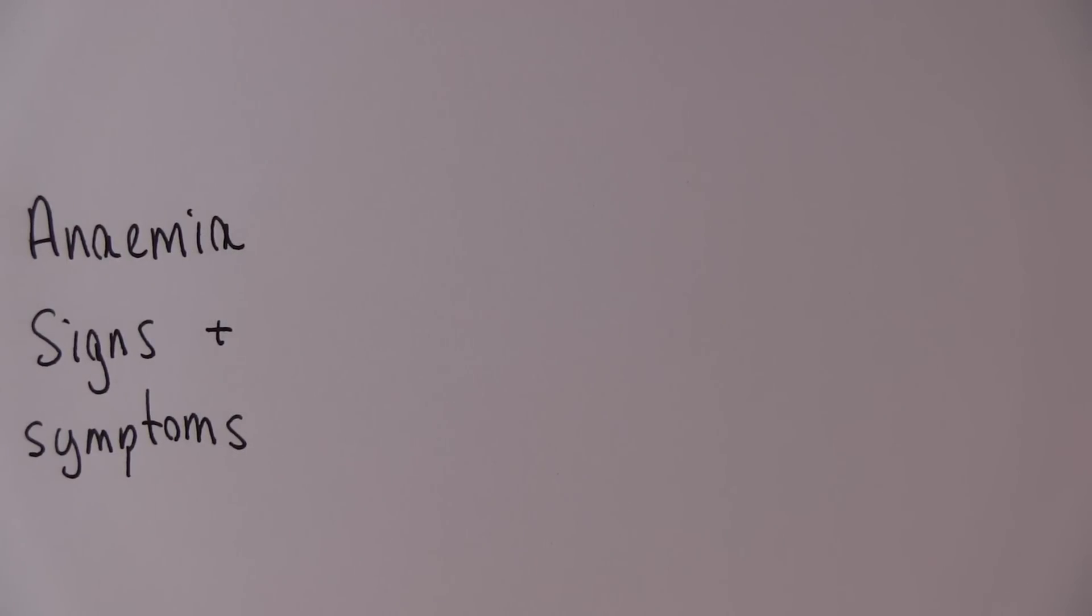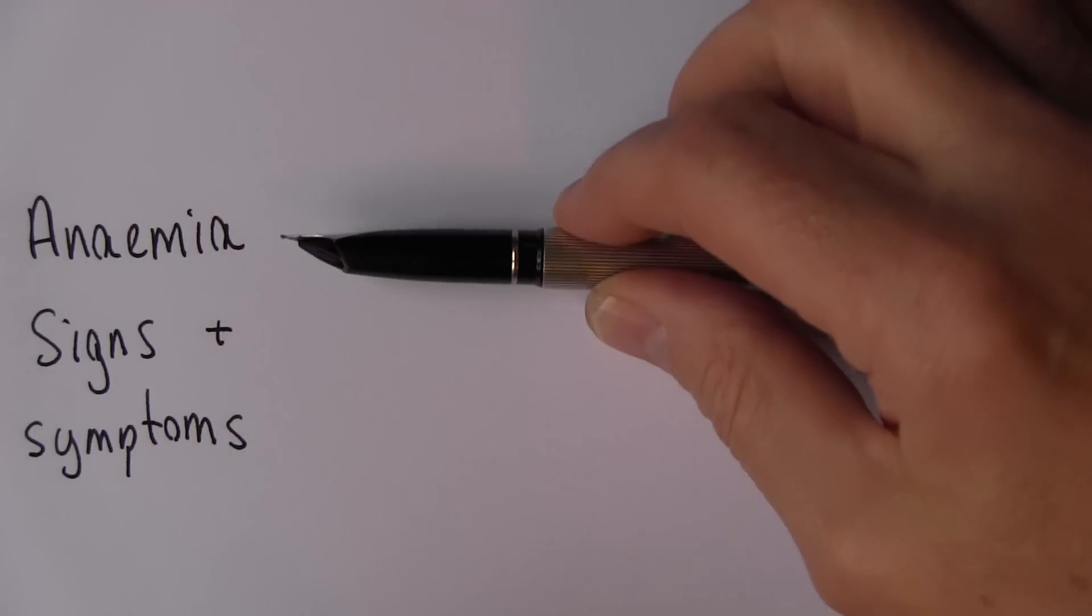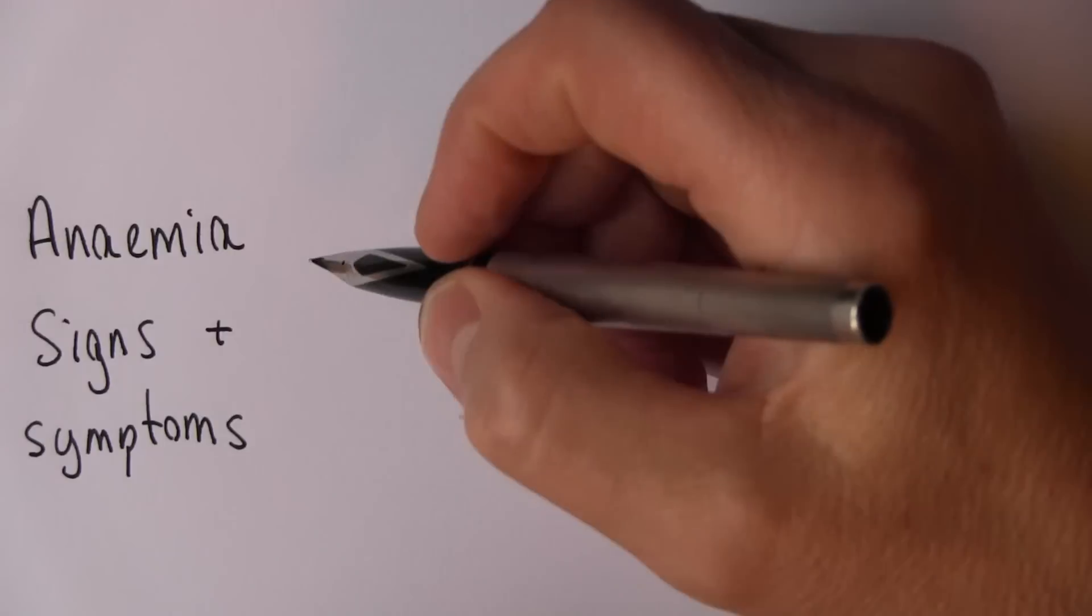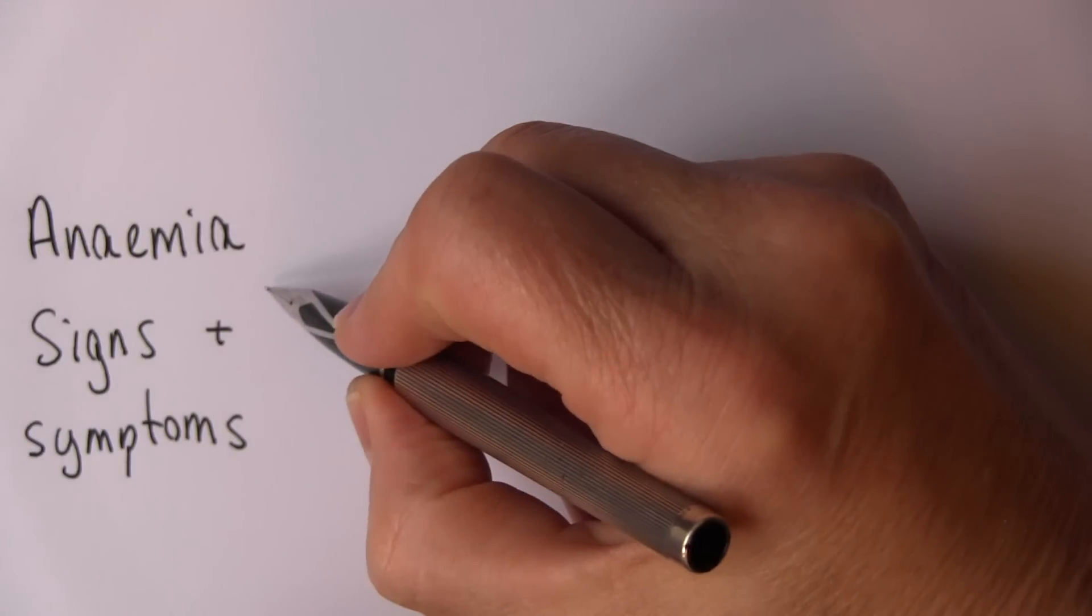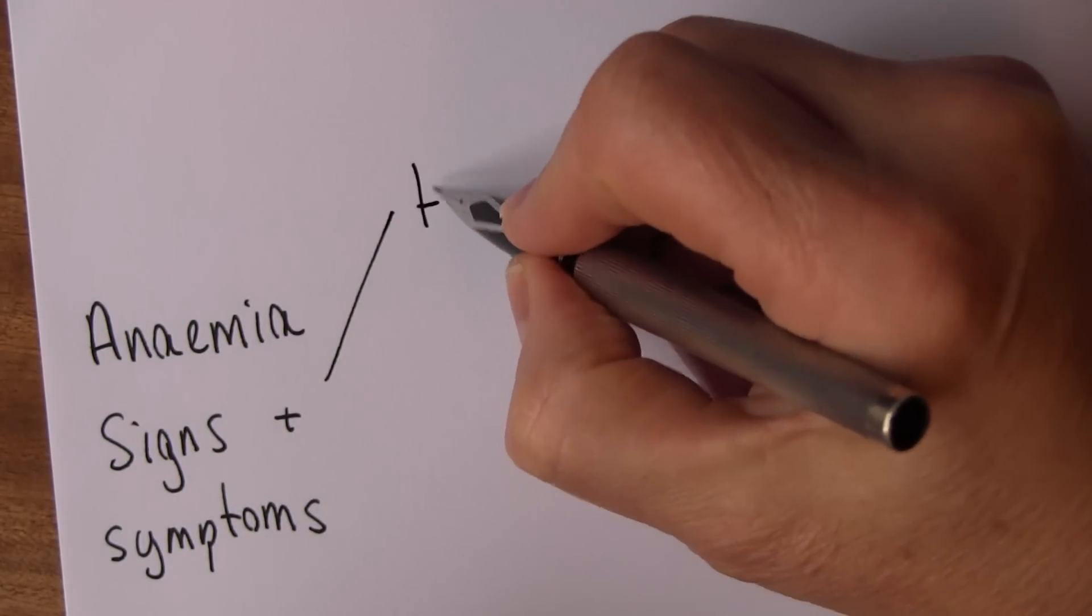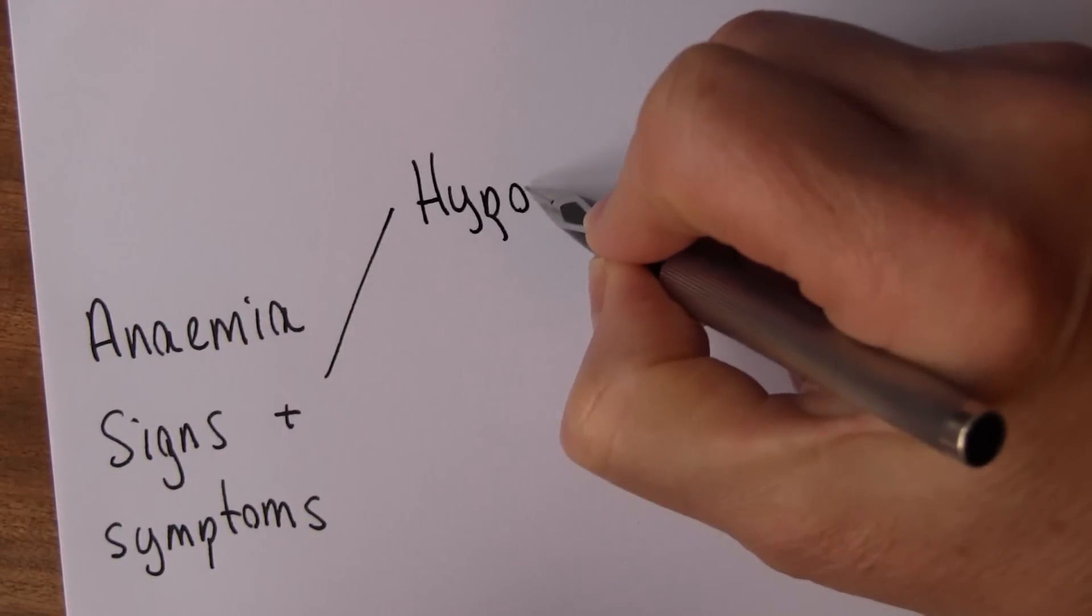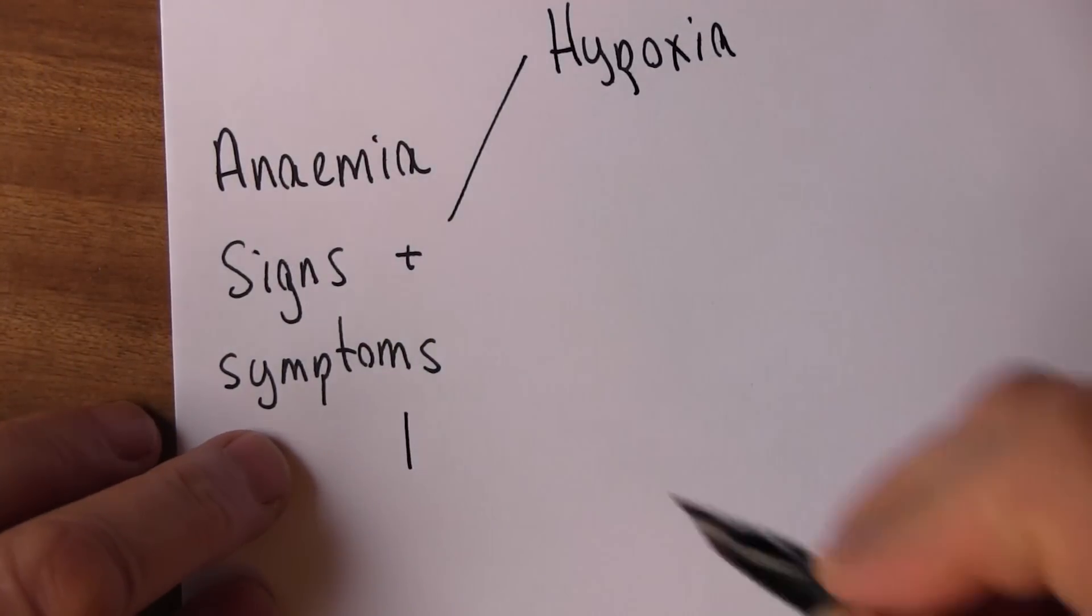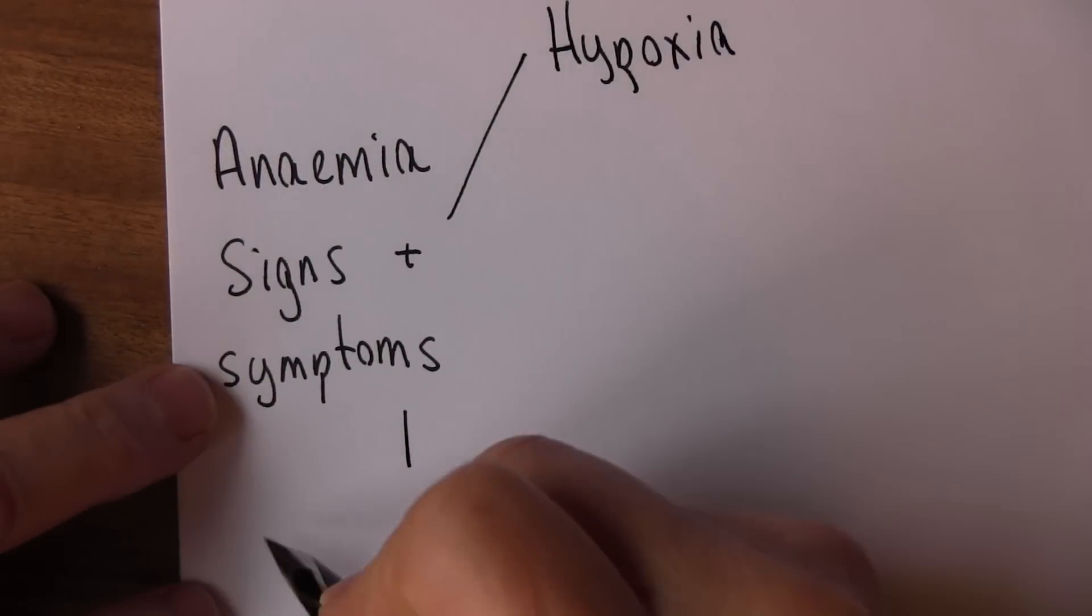We're carrying on looking at the signs and symptoms of anemia. We've just looked at the signs and symptoms generated by the underlying cause of anemia, but in this section we want to look at the signs and symptoms caused by the anemia itself. To do this, I want to divide it into two categories: the first is clinical features caused by hypoxia, and the second is clinical features caused by hypoxemia.